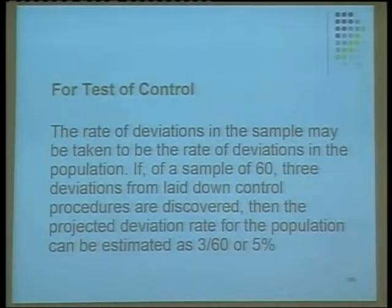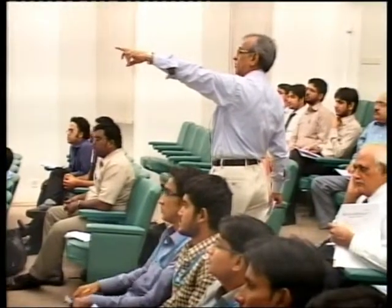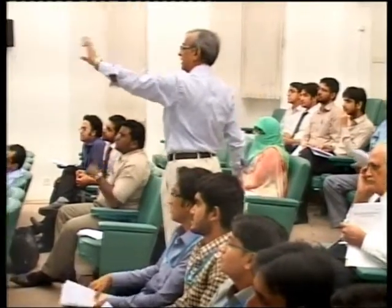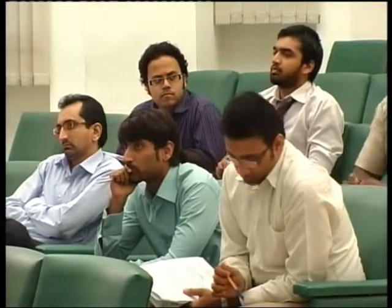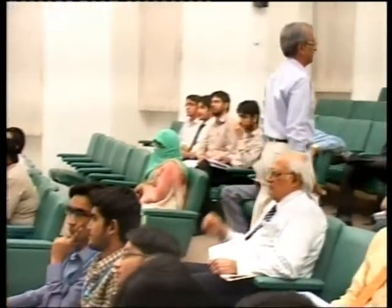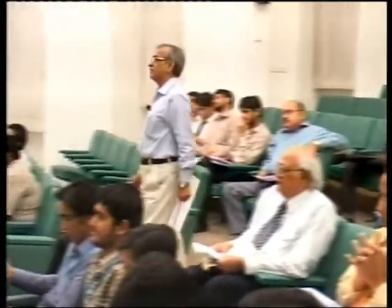For the test of control, what is the deviation? For example, in a sample of 63, 3 deviations from a laid-down control procedure are discovered. Then the projected deviation rate is 3 over 60, that is 5 percent. So if this 5 percent rate we apply to the population, there can be an error in the population amounting to 5 percent. If this is within your range, within performance materiality, within your tolerable deviation rate, then the preliminary assessment of control risk is confirmed.